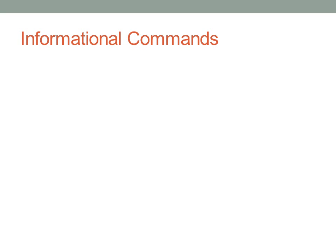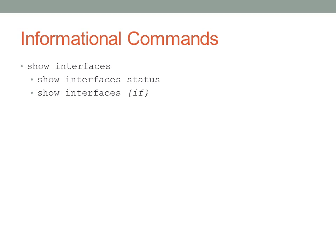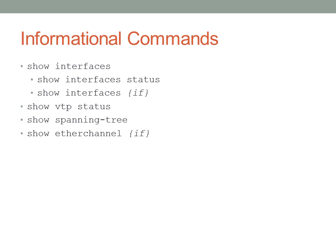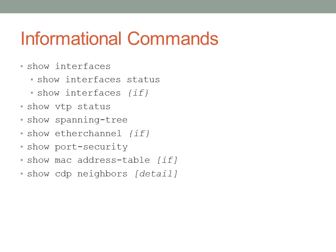There are some informational commands useful for troubleshooting. 'Show interfaces status' shows brief status information for the entire switch. 'Show vtp status' shows VTP information. 'Show spanning-tree' has many sub-options — check with a question mark. 'Show etherchannel' is useful if you have an EtherChannel configured. 'Show port-security' lets you see what violations have occurred. 'Show mac address-table' shows MAC addresses, and you can optionally specify an interface. 'Show cdp neighbors' and 'show cdp neighbors detail' display connected Cisco devices running CDP.